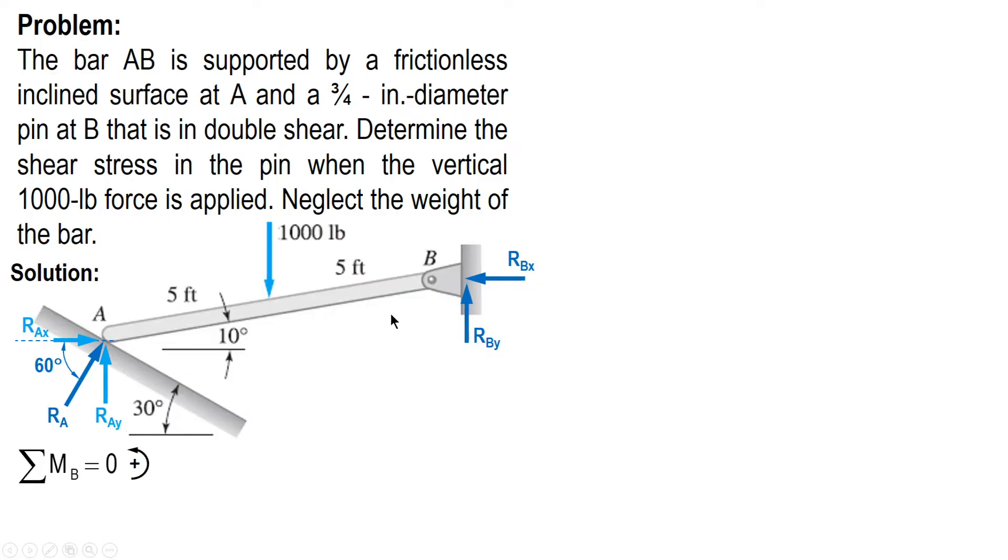We need distances like the distance of RAx to point B. We need to find this distance as well as the distance of RAy from B. And also, the perpendicular distance of 1000 to point B. We use trigonometry. The hypotenuse is 10, the angle is 10 degrees. So the opposite side is 10 sine of 10 degrees, which is 1.736. This one is 10 cosine of 10 degrees, which is 9.848.